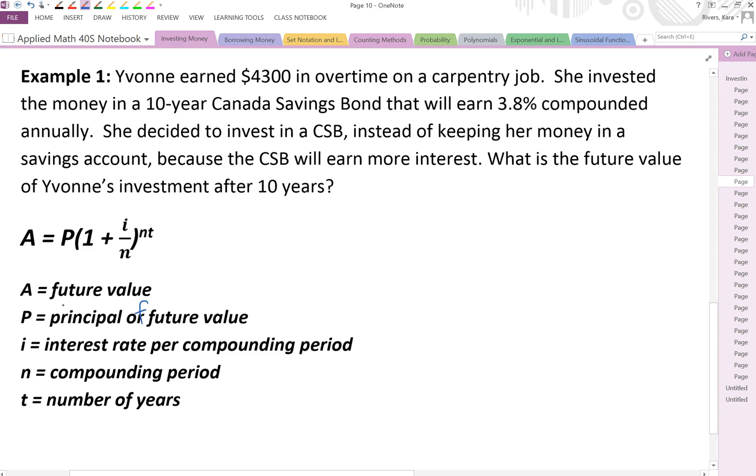So here our future value is A, P is our principle of the future value, I is the interest rate per compounding period where before we're using R now we're using I, N is the compounding period itself so how many times is it compounded in a year, and then T is the number of years or time in our number of years. So if we look at the question again knowing these are our variables let's pick that information out.